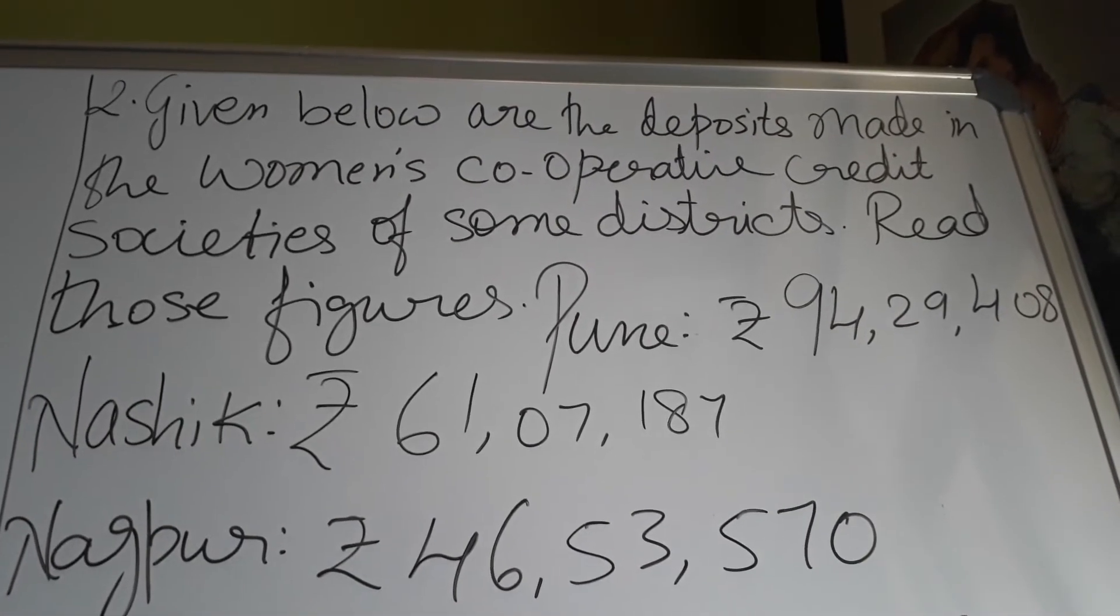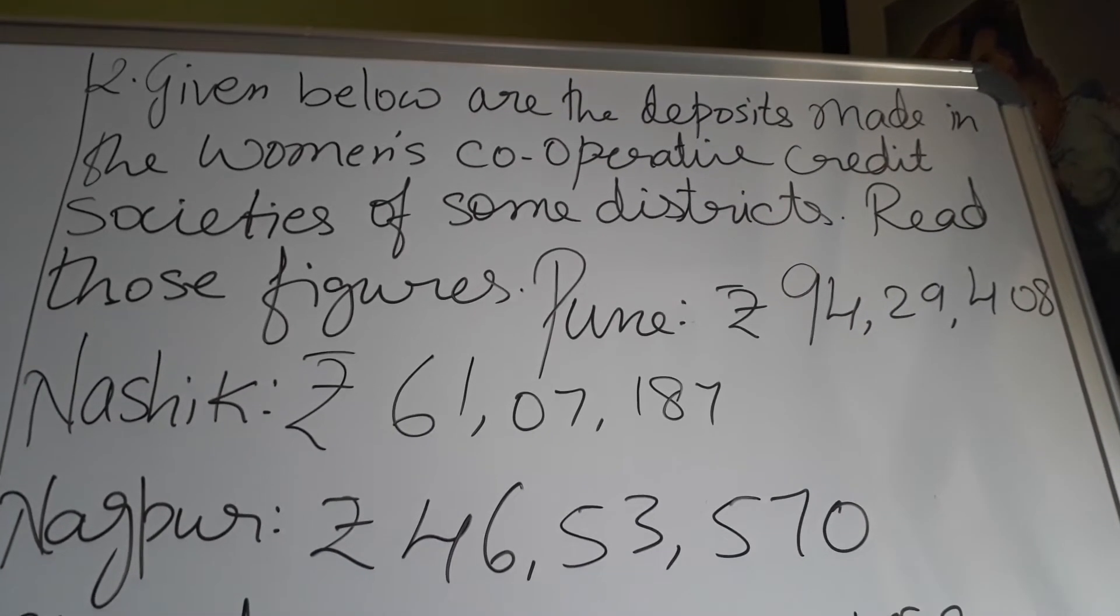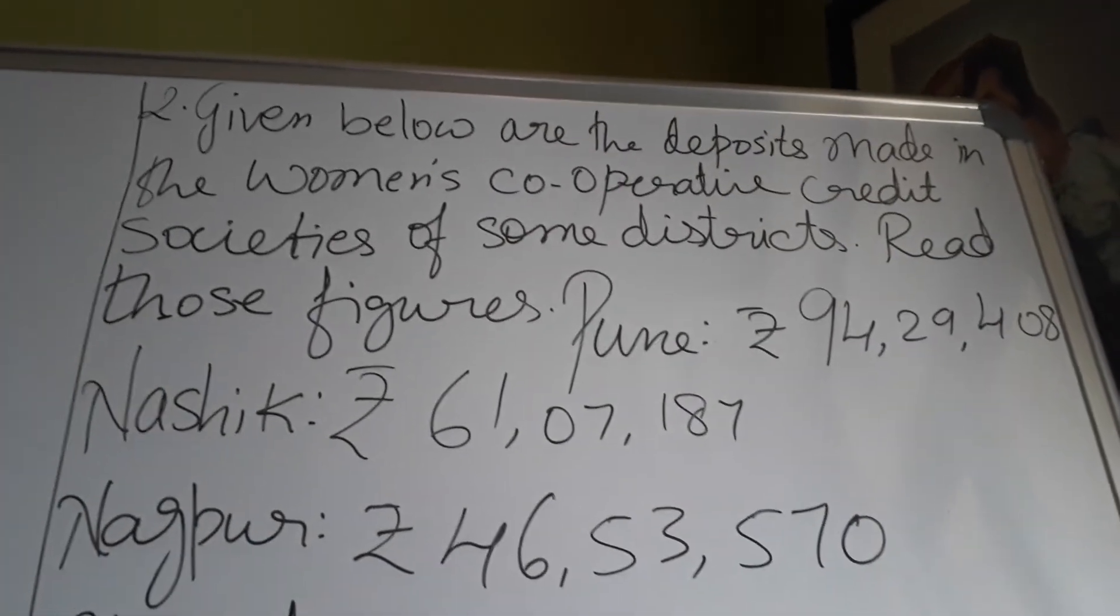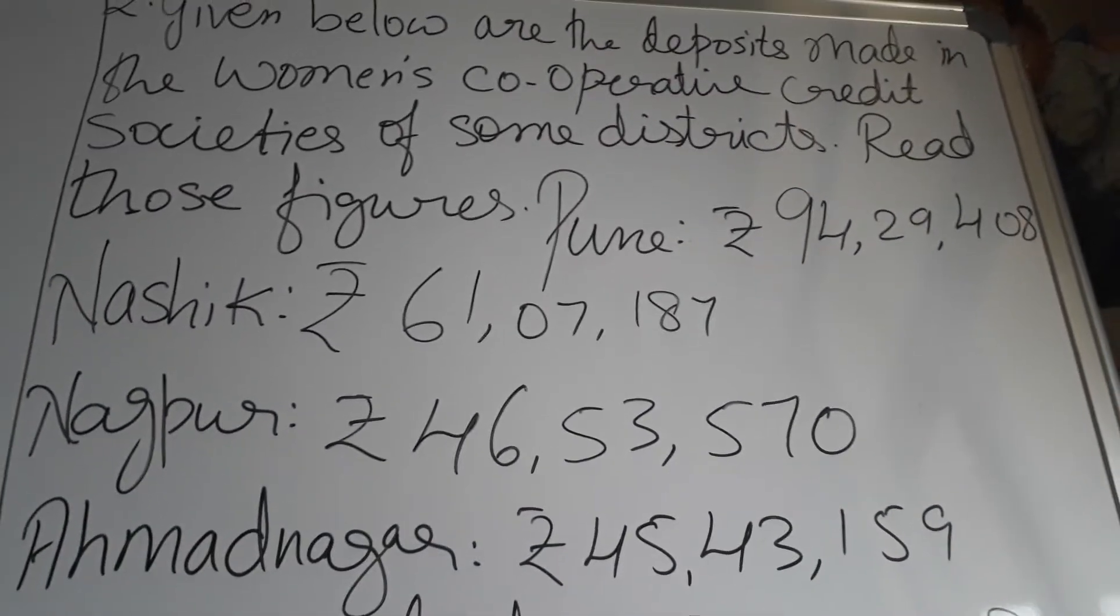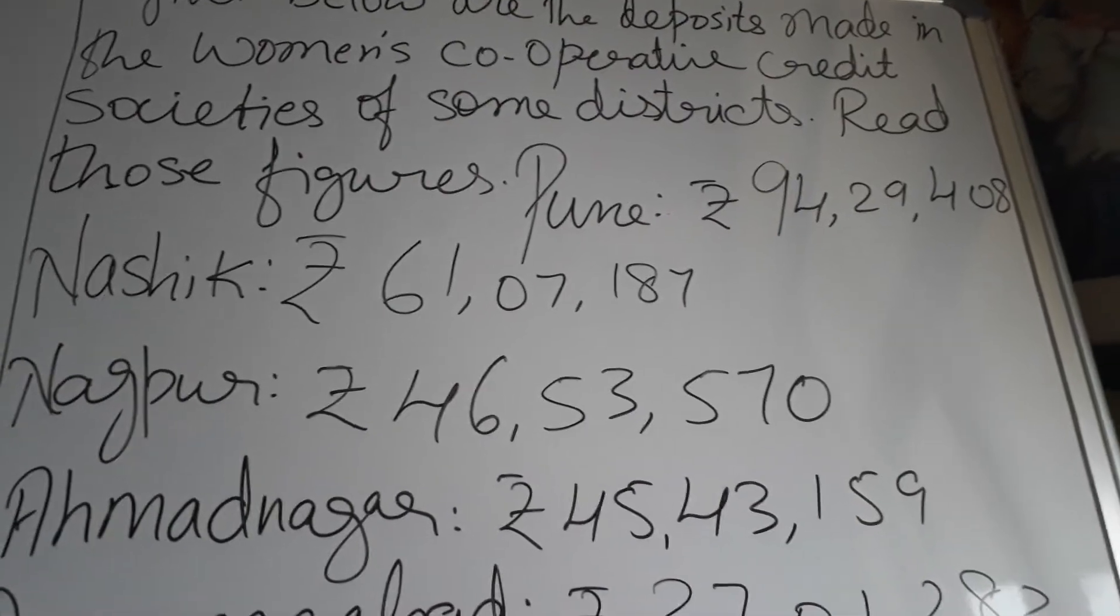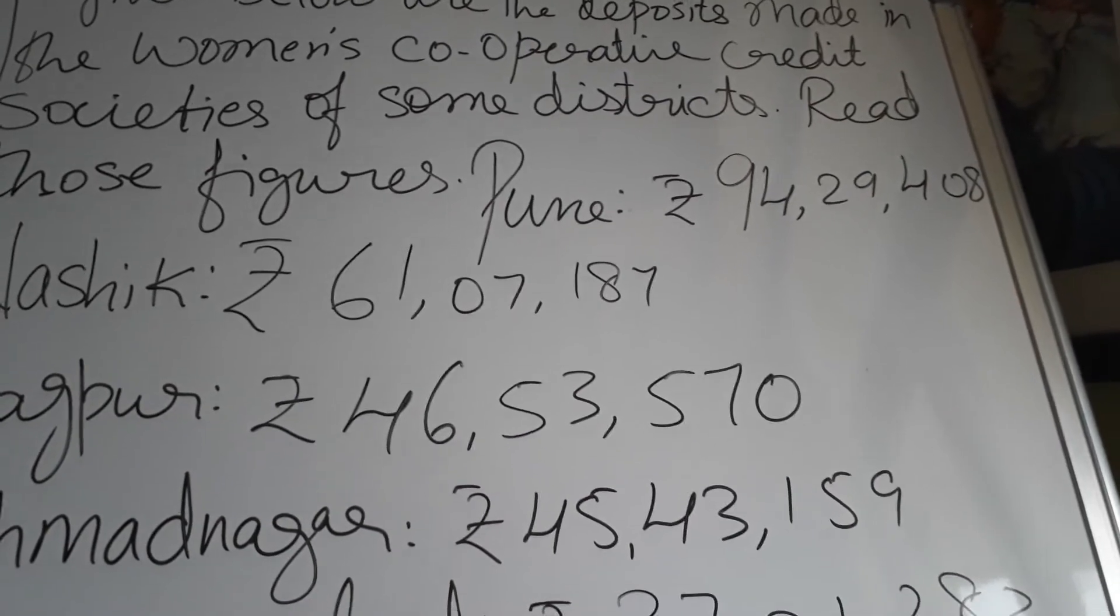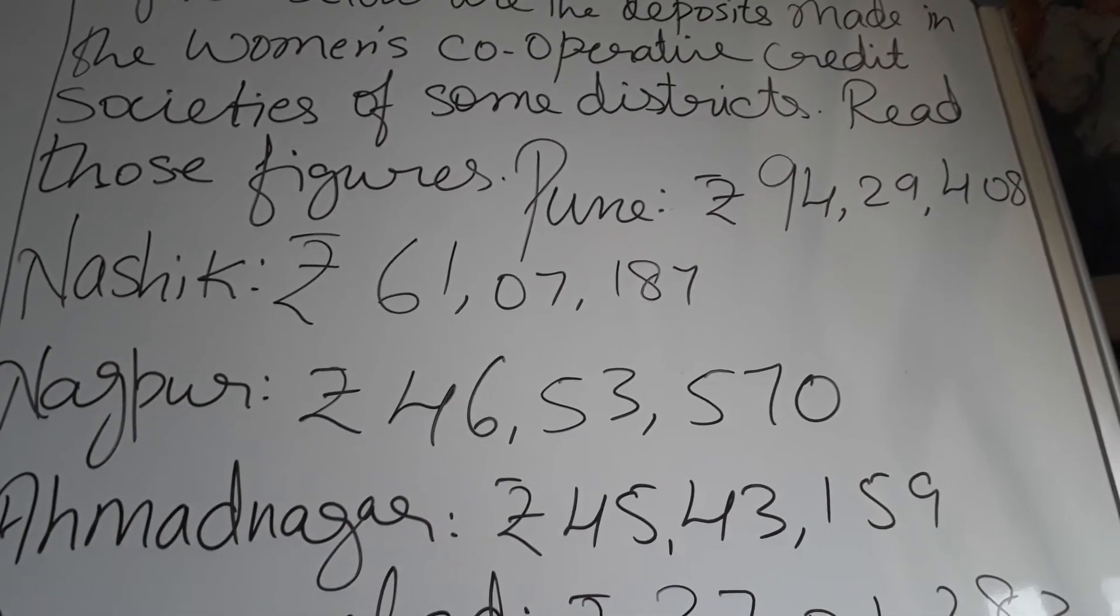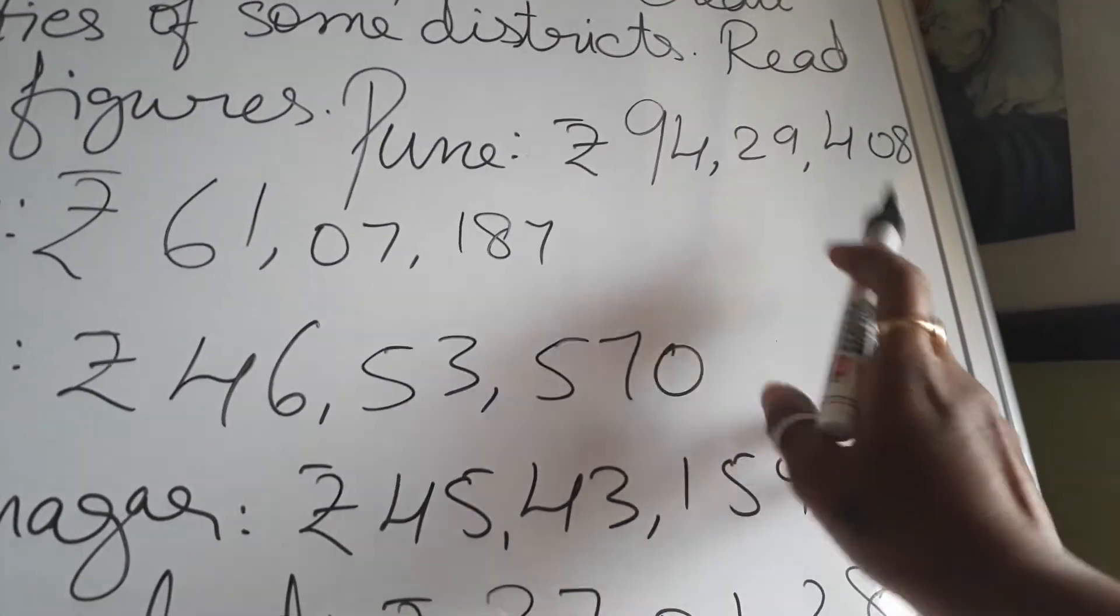Given below, second question. Given below are the deposits made in the women's cooperative credit societies of some districts like Mumbai, Pune - these are all districts, right? Nashik, districts. Read those figures. We don't have to do anything, we have to just read those figures. Again you'll say nobody is seeing, let me not do this. No, no, you're cheating with yourself, not with anybody - with your own self. So think, if I'm sincere with my own self I will come out with very good outcome. So Pune has made rupees 94 lakh, 29,408. Now you understood how to read it, right?